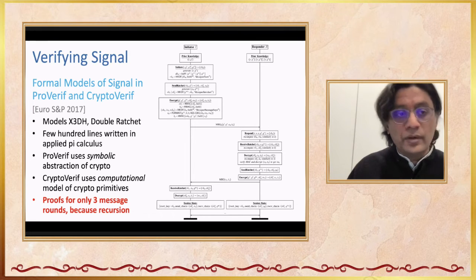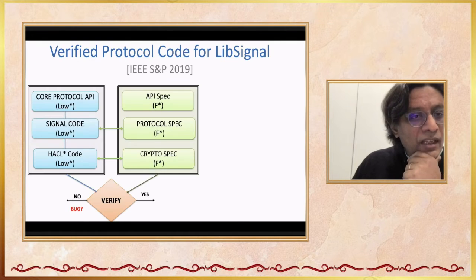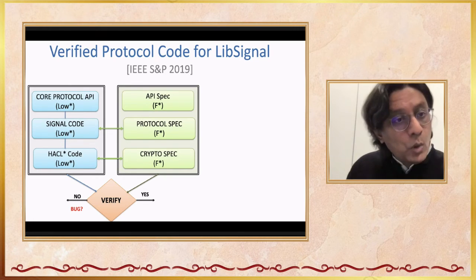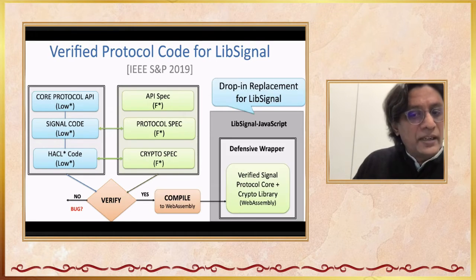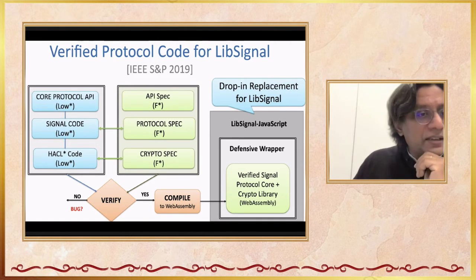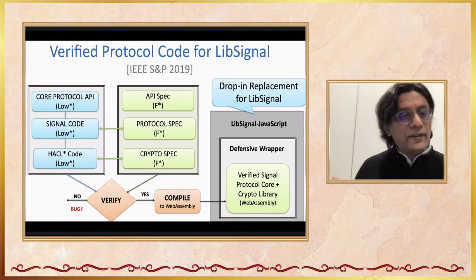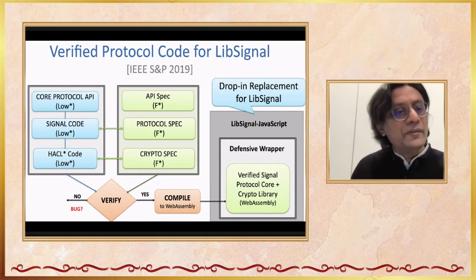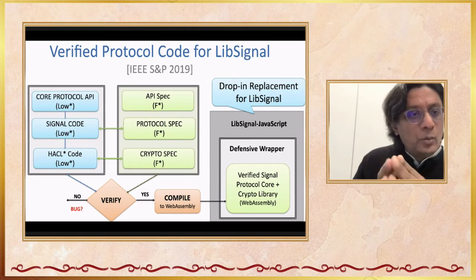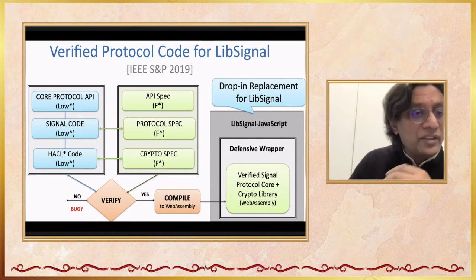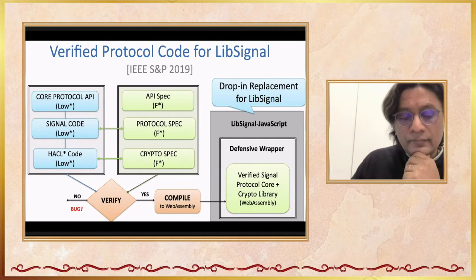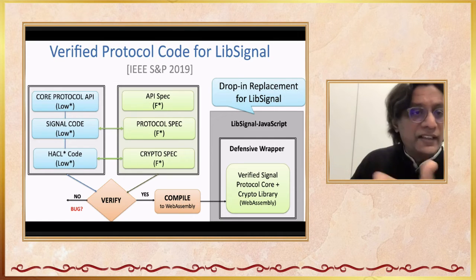Assuming you have a crypto proof for Signal, can you prove that the code for Signal is correct? Yes. Using the same approach as HacklStar, you write the spec and prove in F* that the code matches the spec. Then you can take this code and plug it back into a Signal implementation, giving you a verified Signal implementation where all the protocol code has been verified. This was done in a paper at IEEE S&P 2019, where the entire Signal implementation was verified and then plugged back into the Signal messenger with no discernible change — and it was even faster than the previous implementation.